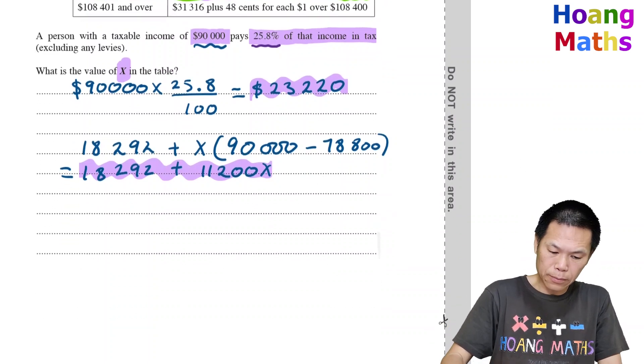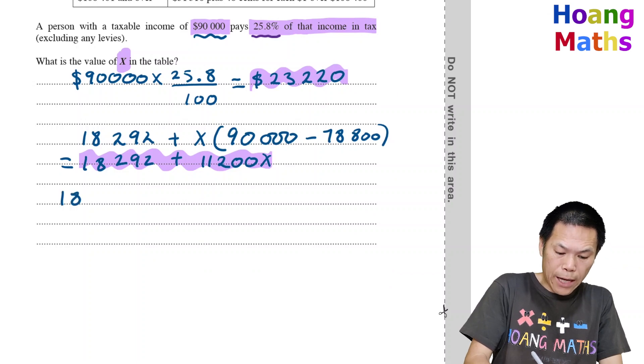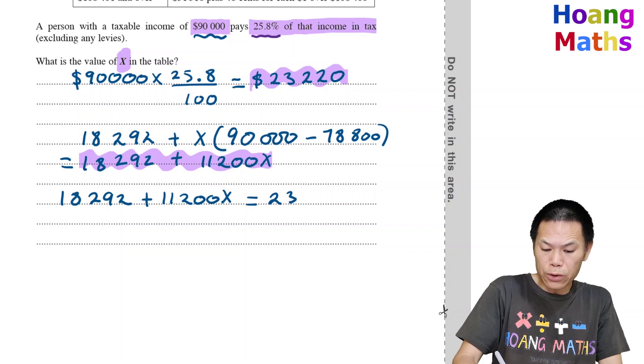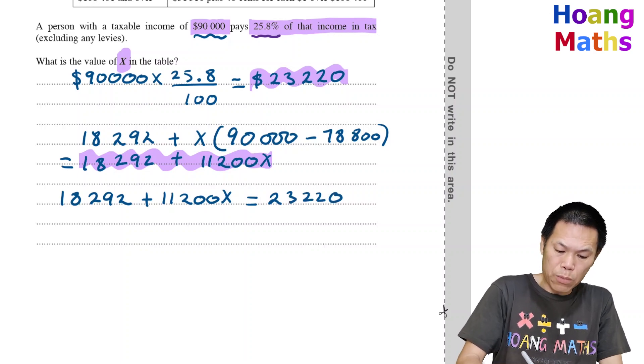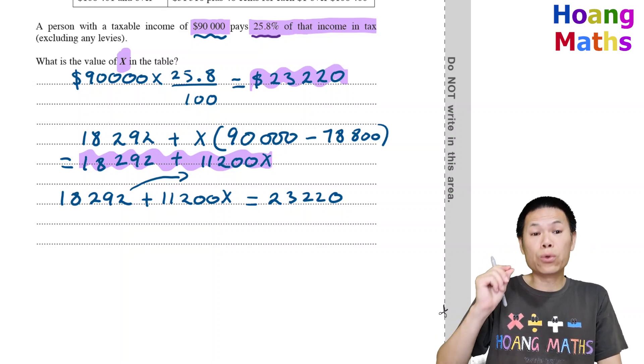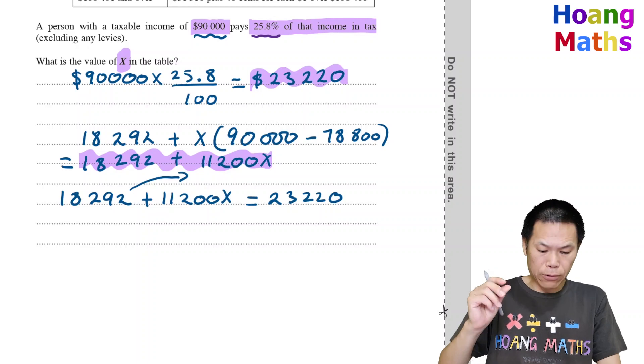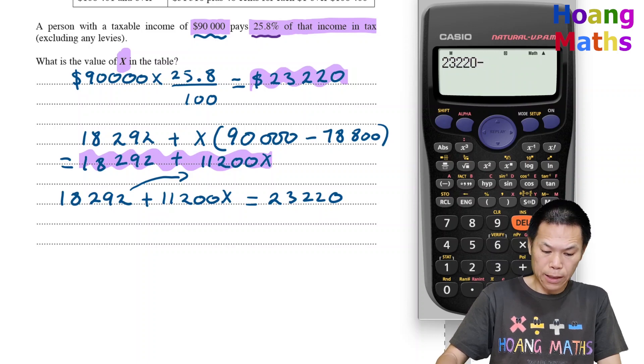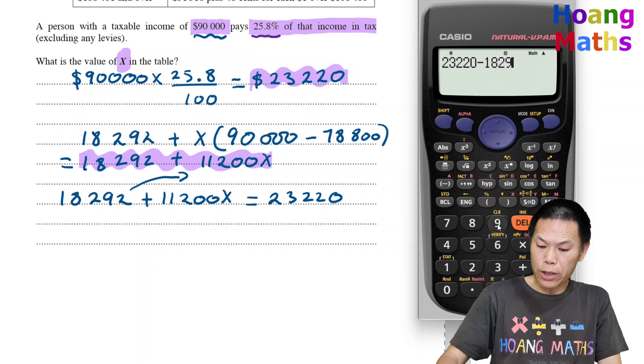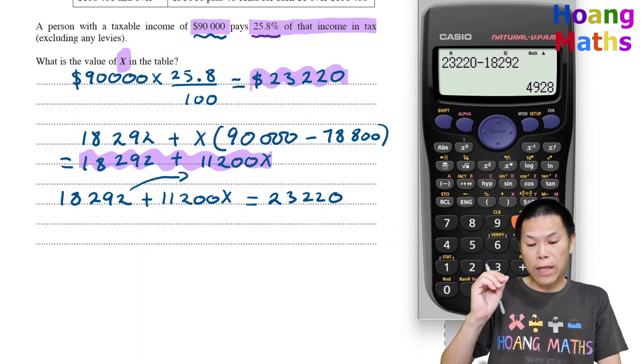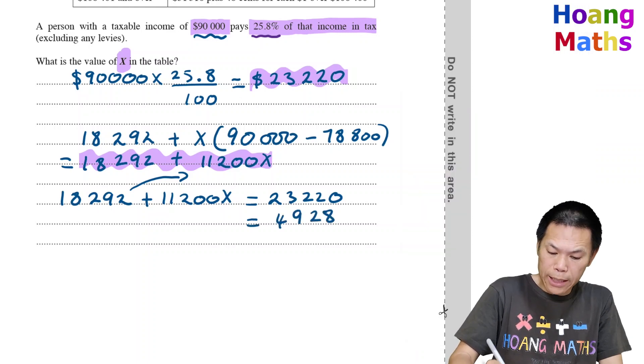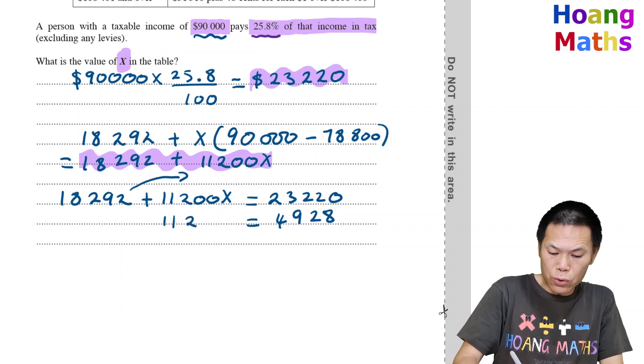$18,292 plus $11,200 X equals $23,220. Moving this to that side gives $23,220 minus $18,292, which is $4,928. That equals $11,200 X.